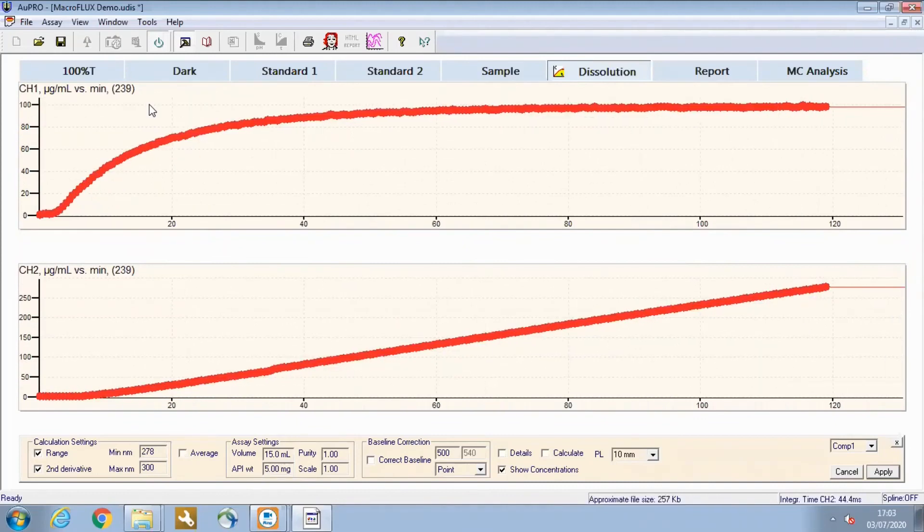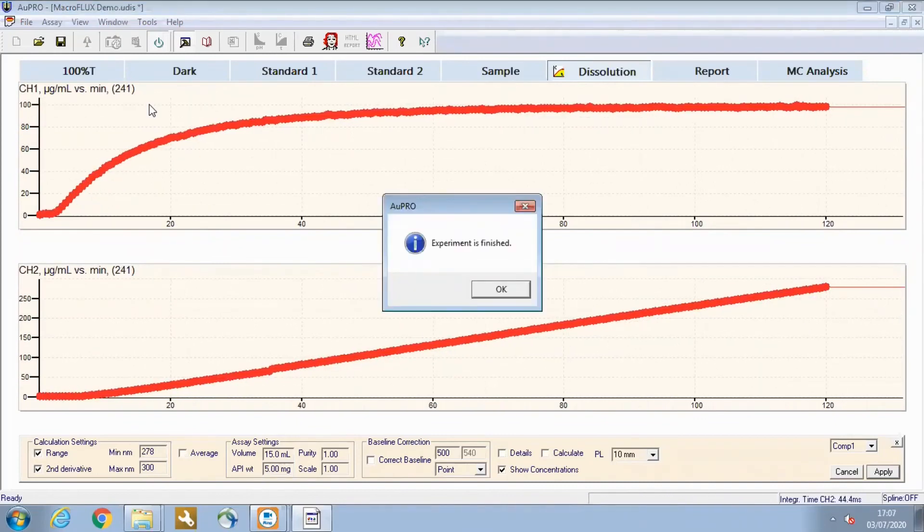Spectral collection is stopped automatically at the end of the assay, and results can be viewed within the AU Pro software or can be exported into Excel for external processing.